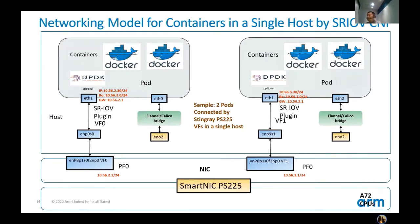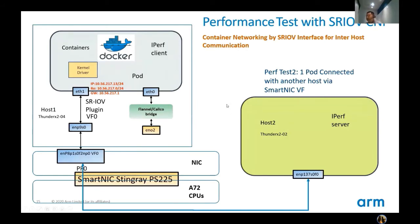Here is the networking model for containers in a single host by SR-IOV CNI. We provide SR-IOV CNI by SmartNIC PS225 with a single PF but two different VFs, connected by different VFs within a single host. For inter-host communication, we also use the SR-IOV CNI plugin, which provides VF support to the outside world via the SR-IOV interface. The pod can communicate with another host through the SR-IOV interface via ENP9S0 to the SmartNIC, through SmartNIC VF0 and to the outside host.